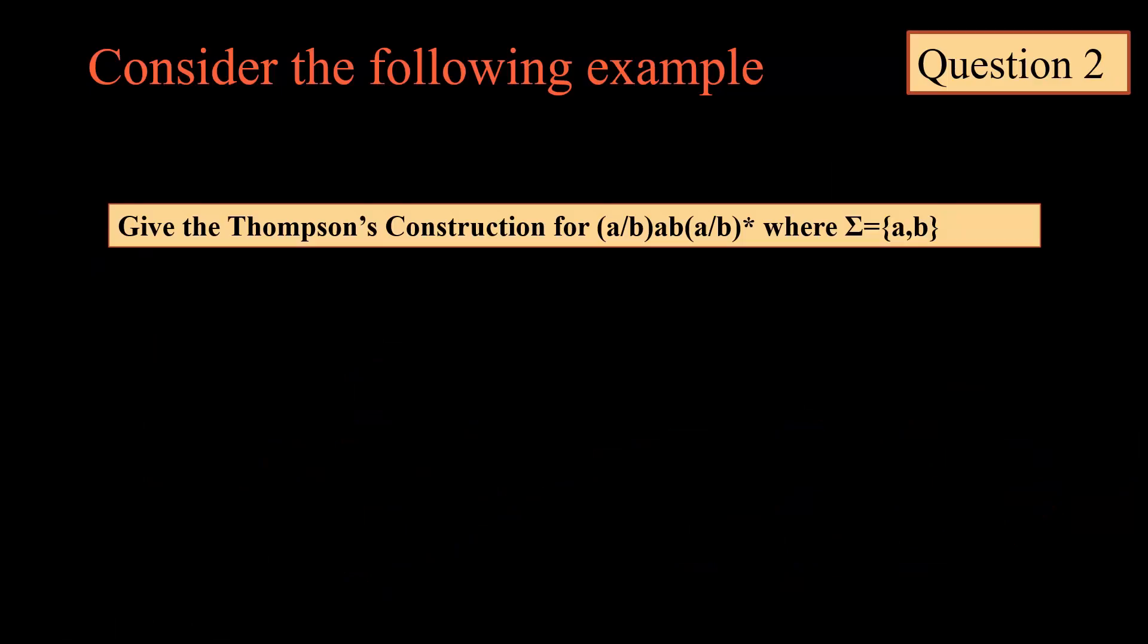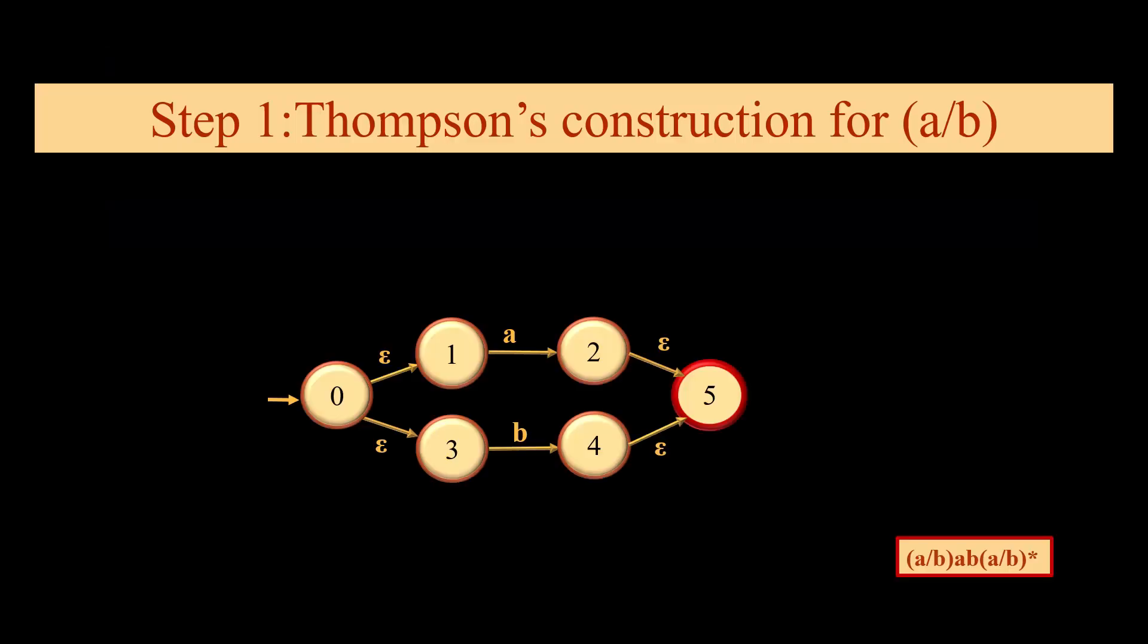In the next example, we have to consider Thompson's construction for (a or b) into ab into (a or b) whole star. First, we will consider Thompson's construction for a or b. As far as a or b is concerned, we will have four epsilon moves.